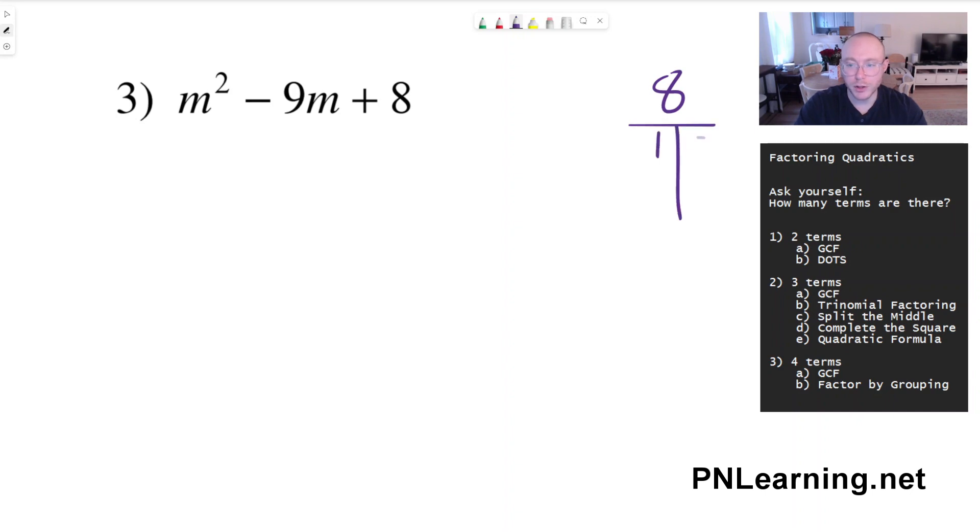The factors of eight would be one and eight, two and four. Now in this case, our C term was positive. This is going to mean that either both of these factors are going to be positive or both of these factors are going to be negative. This way they multiply to give you positive eight and they could add up to different things.